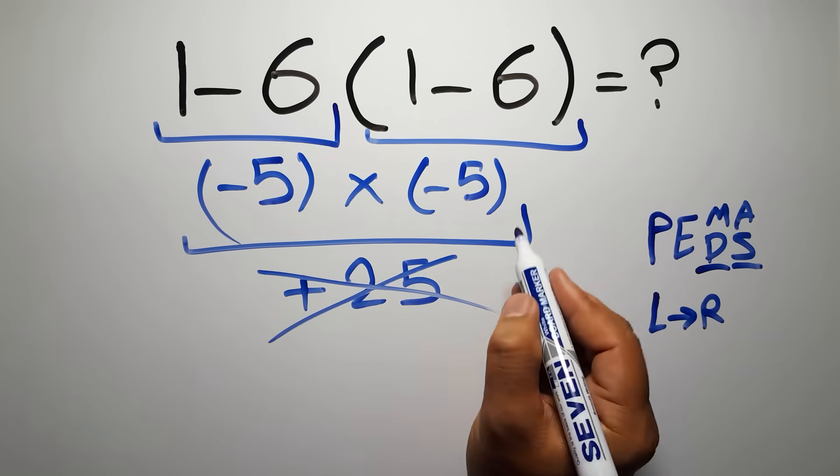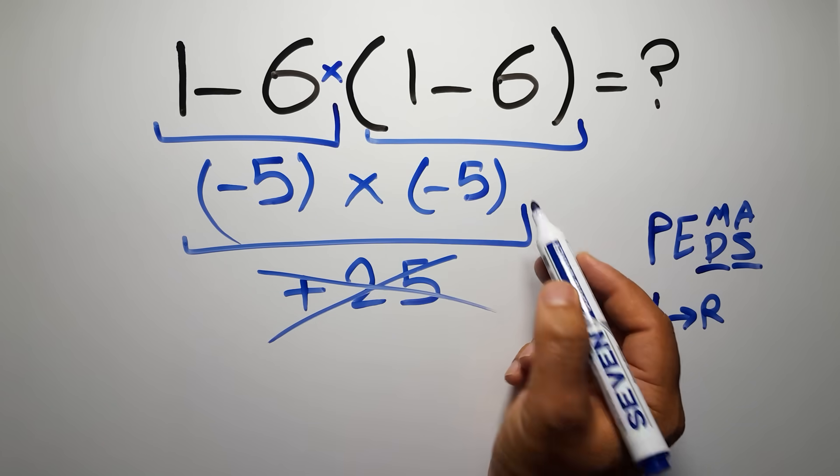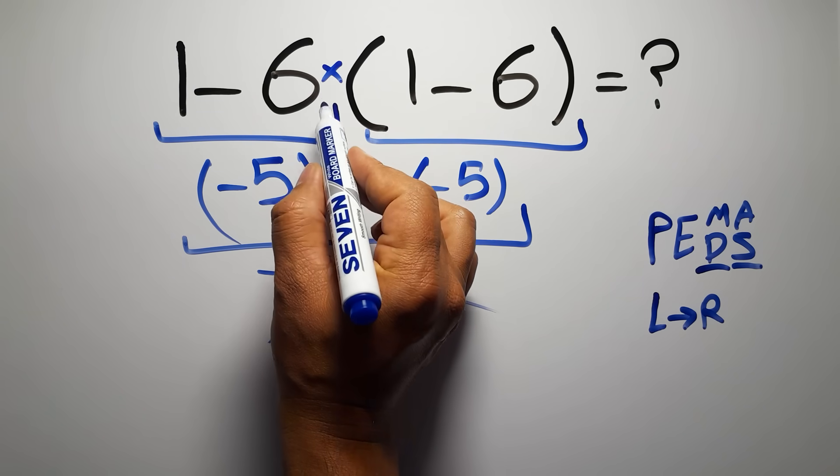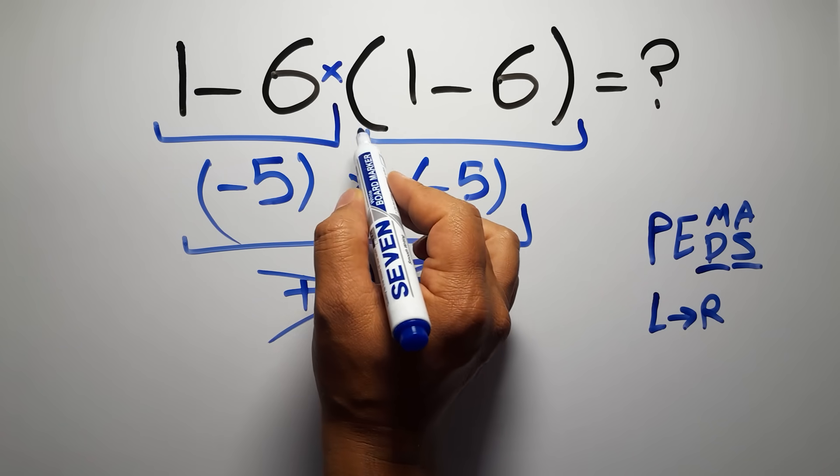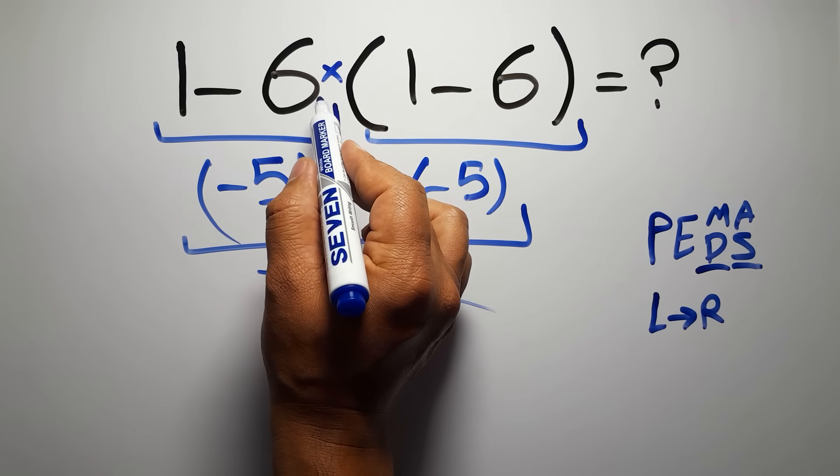In this expression we have 1 subtraction, 1 multiplication, and 1 parentheses. Inside this parentheses we have 1 subtraction. Here we have a multiplication, because in mathematics when a number is placed next to parentheses it means multiplication, and we usually don't write a multiplication sign for brevity.